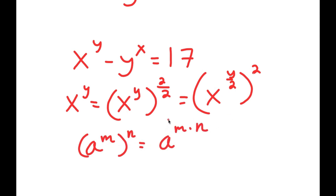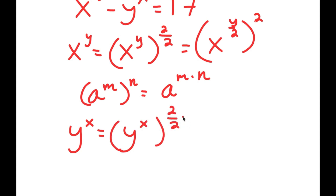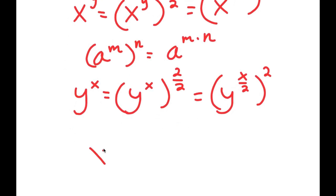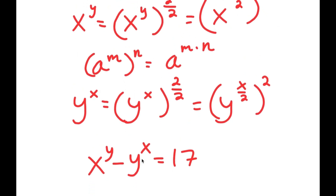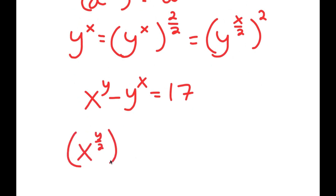Similarly, y to the power of x I can also change up. So y to the power of x, I can rewrite that as y to the power of x to the power of 2 over 2, and this I can rewrite as y to the power of x over 2 to the power of 2. Now, from here, remember my original equation was x to the power of y minus y to the power of x equals 17. I can replace x to the power of y with x to the power of y over 2 to the power of 2, and y to the power of x with y to the power of x over 2 to the power of 2. So now I get x to the power of y over 2 to the power of 2 minus y to the power of x over 2 to the power of 2 is equal to 17.